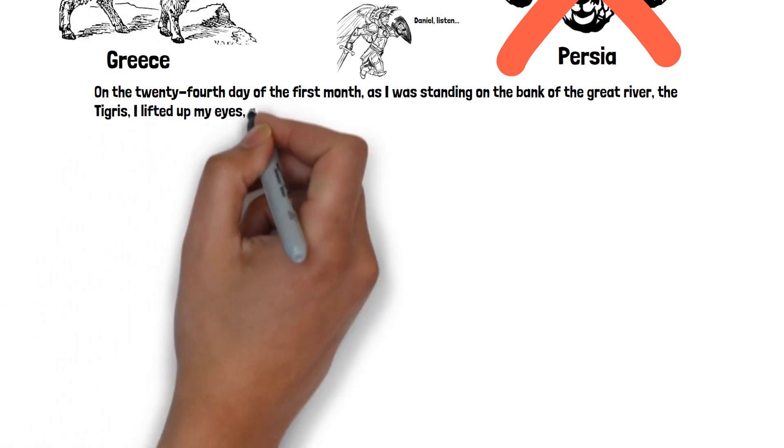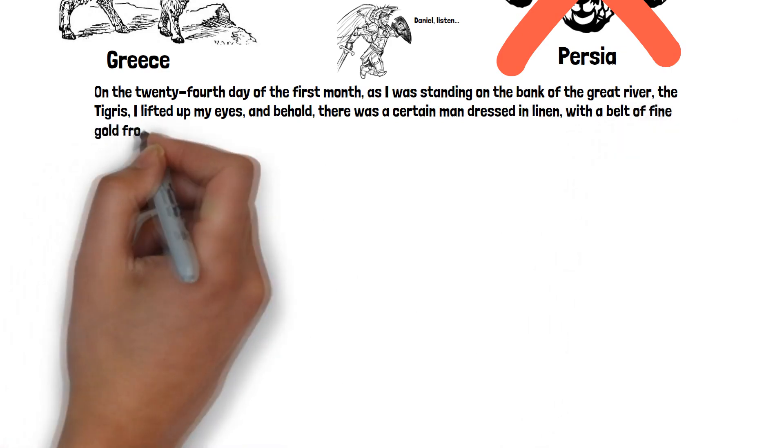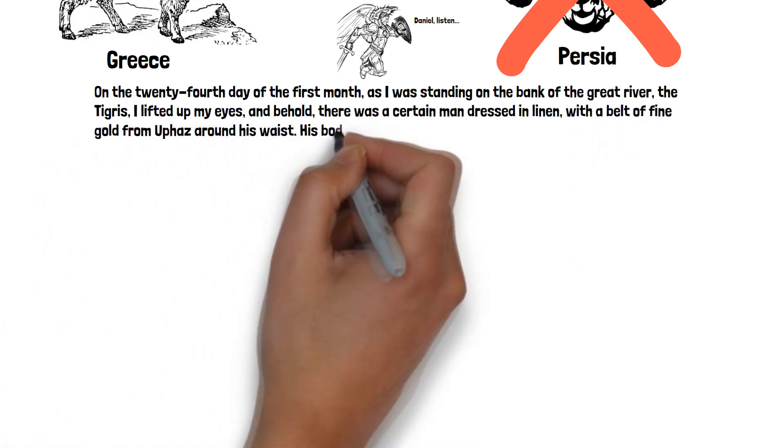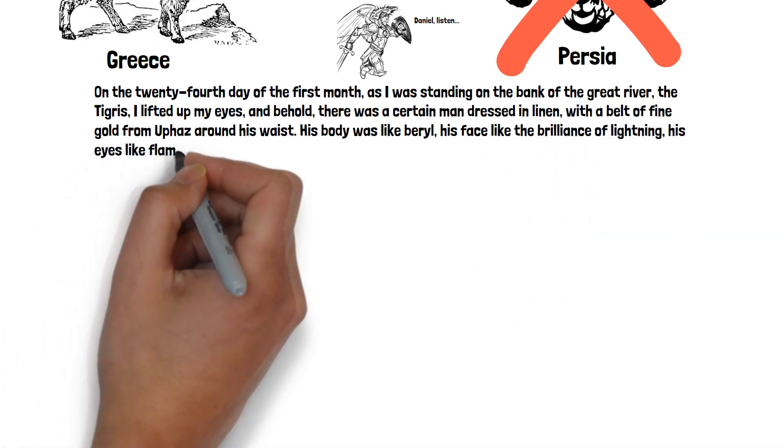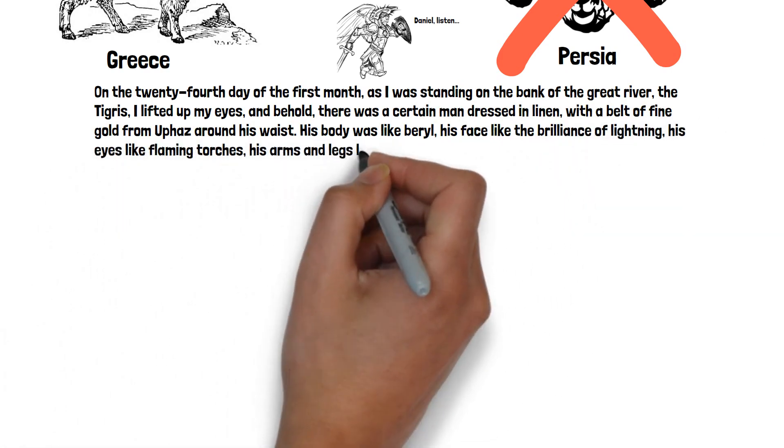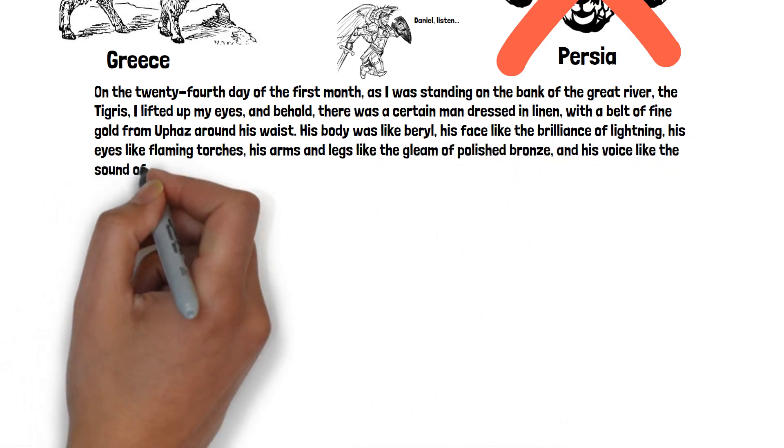I lifted up my eyes and behold, there was a certain man dressed in linen with a belt of fine gold from Euphaz around his waist. His body was like beryl, his face like the brilliance of lightning, his eyes like flaming torches, his arms and legs like the gleam of polished bronze, and his voice like the sound of a multitude.